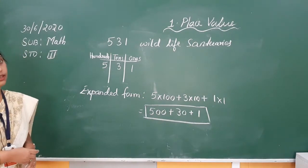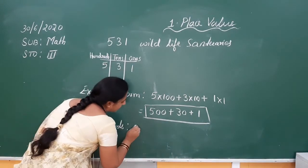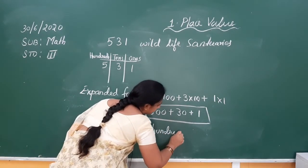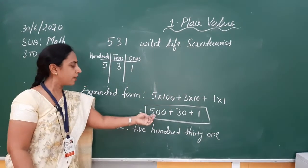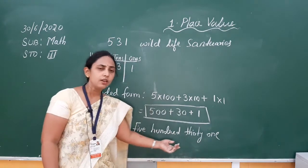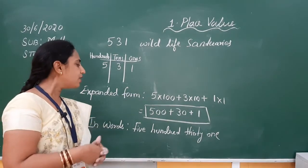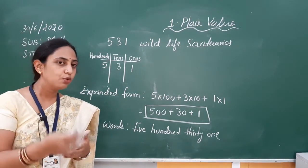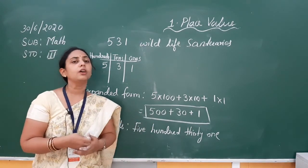So this is the expanded form. How can we write 531 in words? It is five hundred thirty-one. We know 500 plus 30 plus 1 equals 531. This is how we can represent any number in expanded form and in words. Whenever we write in expanded form, we are actually showing the place value — we are describing the place value of each particular digit.